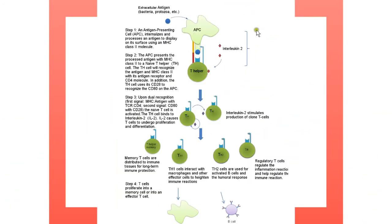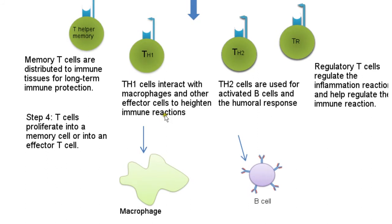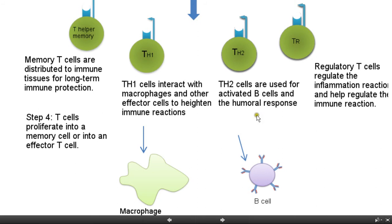An active T cell is now able to bind to interleukin, which causes the T cell to proliferate and differentiate. The T cell differentiates into memory T cells and effector T cells. Memory cells go to secondary lymphoid tissue to help with future infections. The effector T cells are T helper 1 and T helper 2. T helper 2 cells are used to activate B cells in the humoral response. T helper 1 cells increase the activity of other cells such as macrophages and help to activate T cytotoxic cells.